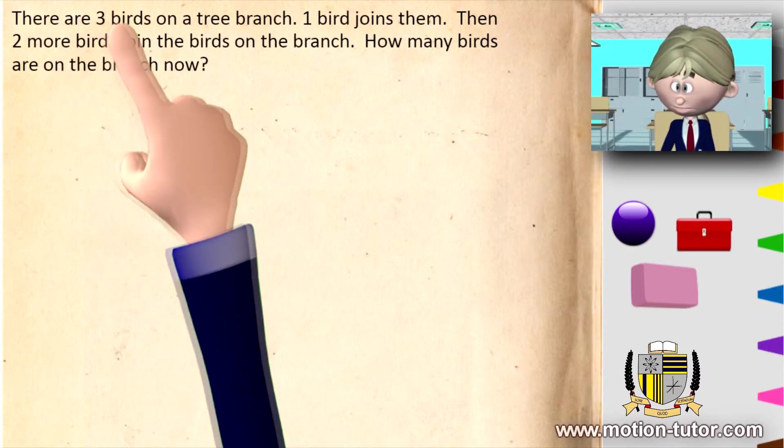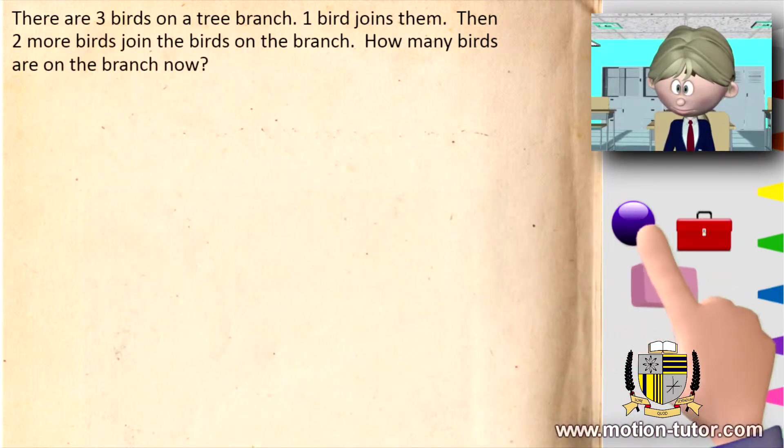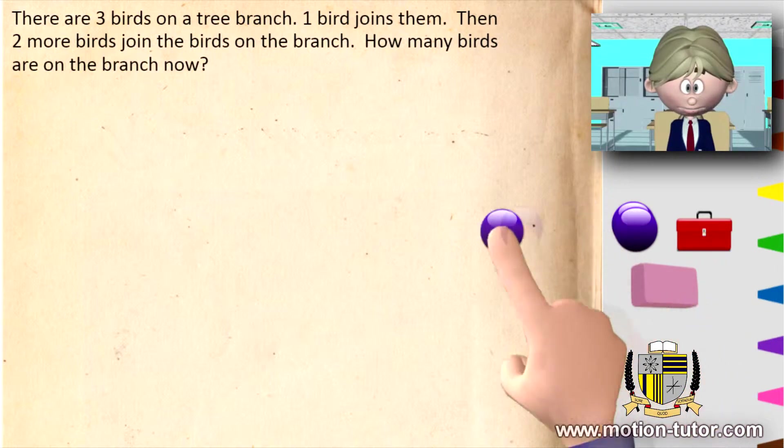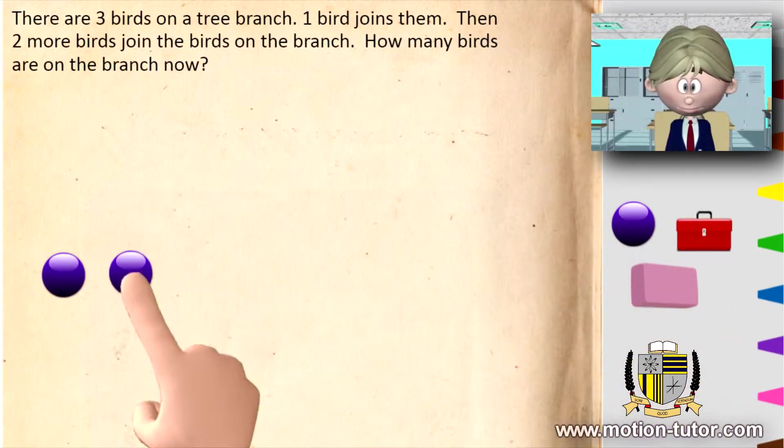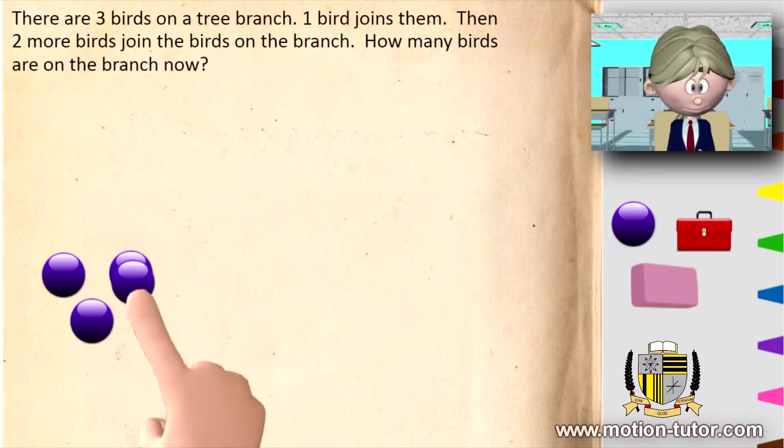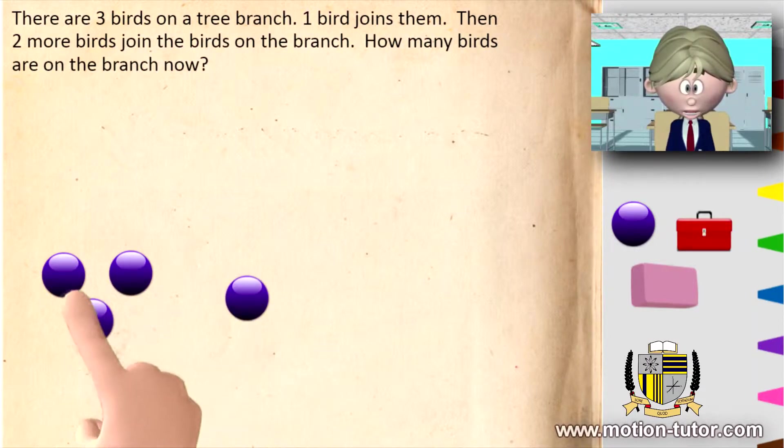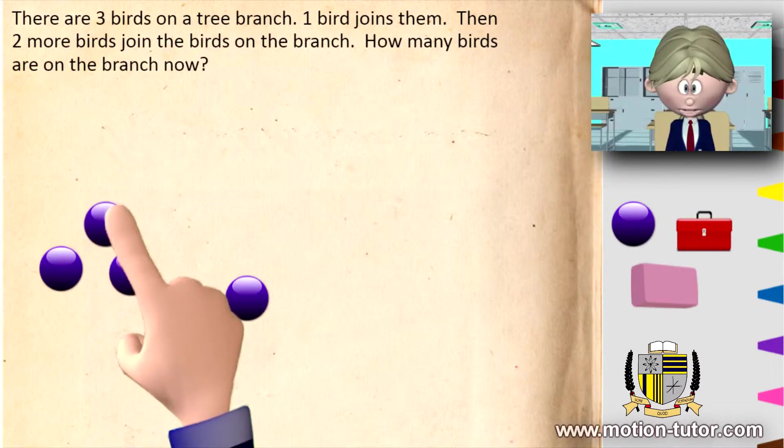So there are three birds on a tree branch. Let's take a look at these three. I'll move this to the side. So there are three birds on the tree branch.